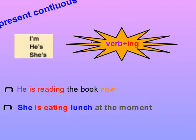We add ing to the verb. So: I am plus verb plus ing; he is plus verb plus ing; she is plus verb plus ing. The present continuous is about an action that's happening now — happening now.